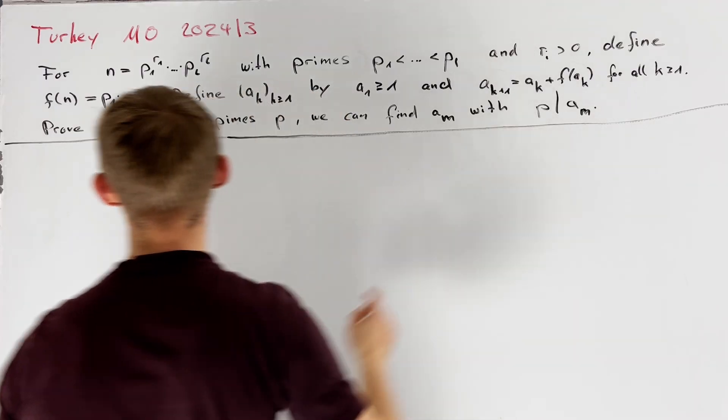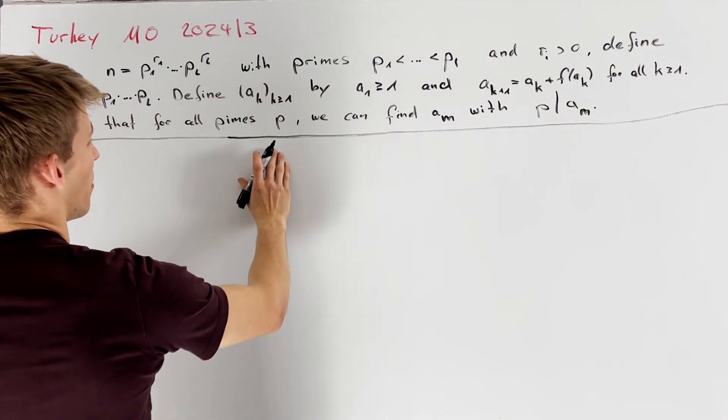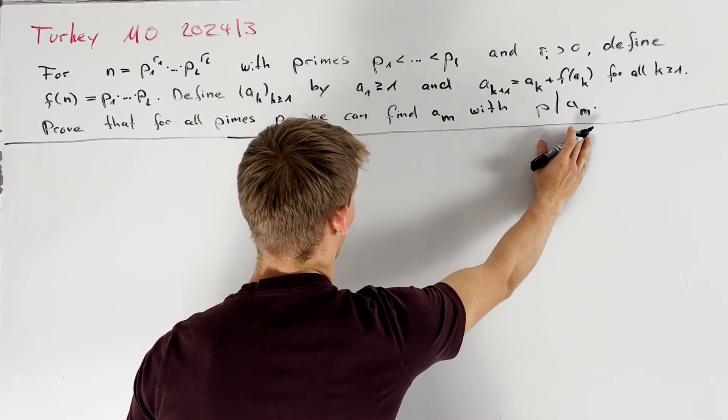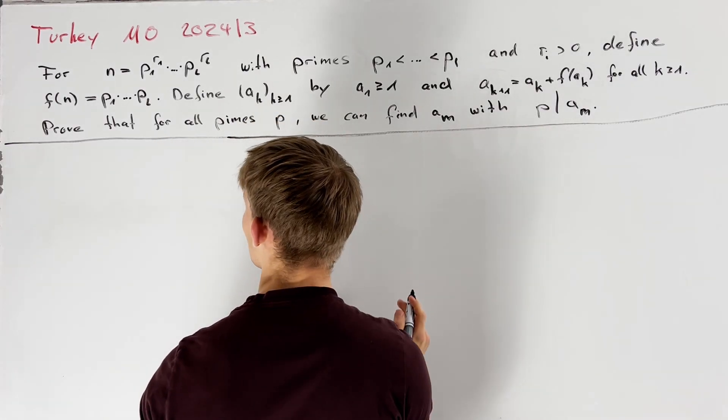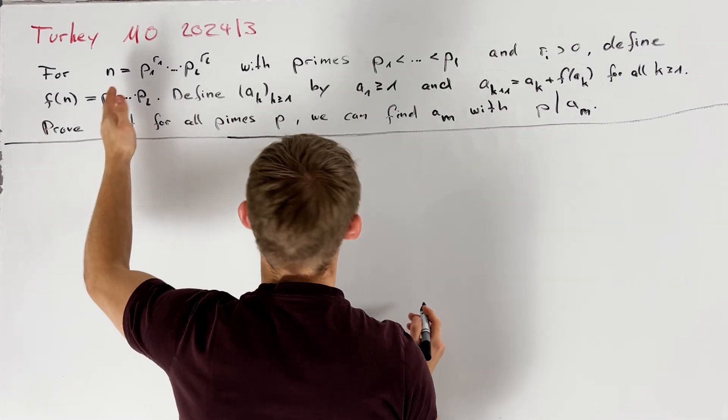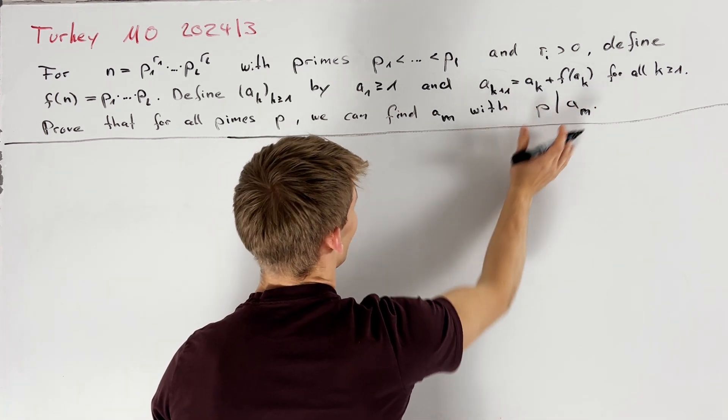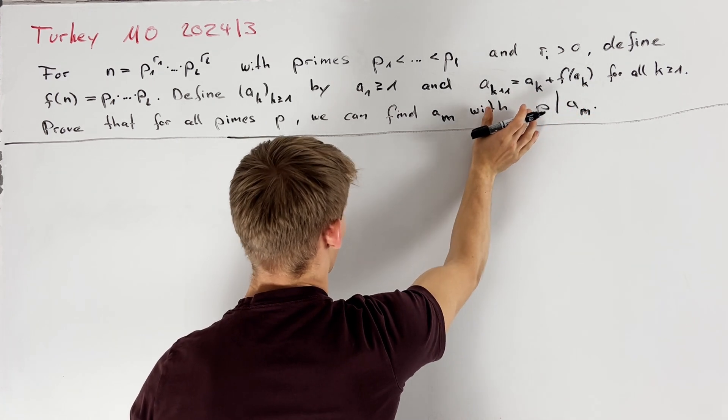Our task is to prove that we can find for all prime numbers p a sequence member a_m such that p is a divisor of a_m. At first I want to note that f of n is a divisor of n and therefore we are able to factor out f of a_k on the right hand side of our recursive formula.